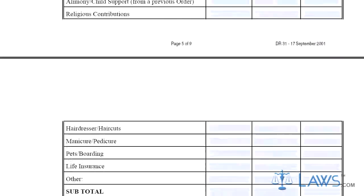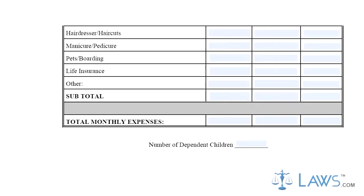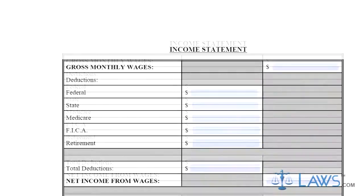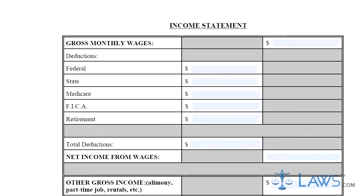Step 10. Page 7 is an income statement. Enter all information requested about your wages, including how much is withheld to pay state and federal taxes. Include all income from all sources.